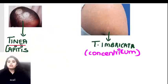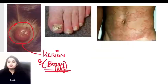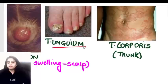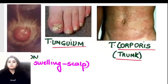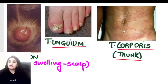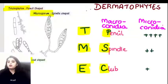Where concentric arrangement of lesions is seen on the skin, that is known as tinea imbricata - remember 'imbricata concentricum.' Kerion is the boggy swelling on the scalp. Nail involvement is tinea unguium, and trunk involvement is tinea corporis. Capitis for scalp, imbricata for concentric lesions, kerion for boggy swelling, unguium for nails, and corporis for trunk.